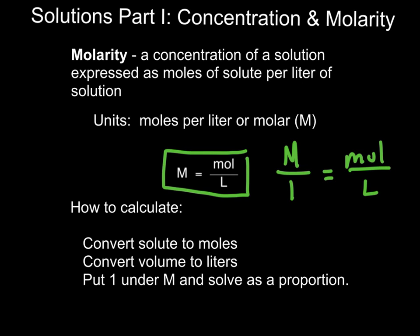So how do we calculate molarity? You first have to make sure that your solute, the chemical that you're dissolving, is converted into moles. So we measure in grams in the lab, we have to convert that gram value into moles. Then we have to make sure that our solution volume is in liters, not milliliters. So we'll have to do that conversion as well. And if you recall, there are 1,000 milliliters in one liter. Put a 1 under the capital M for molarity, and solve it as a proportion like we just talked about.